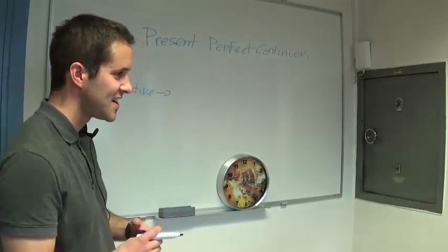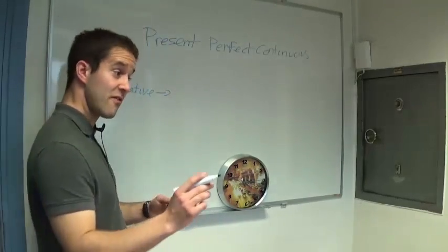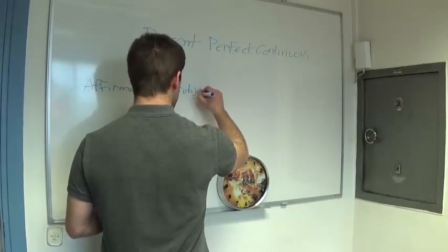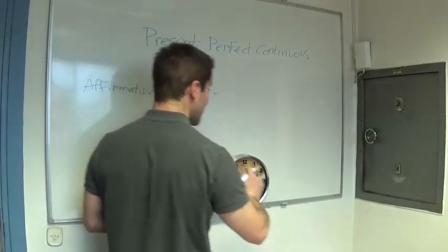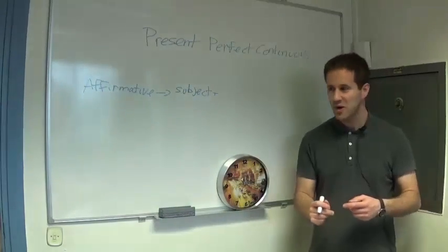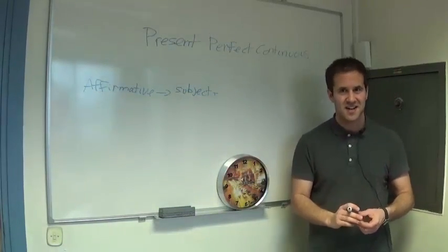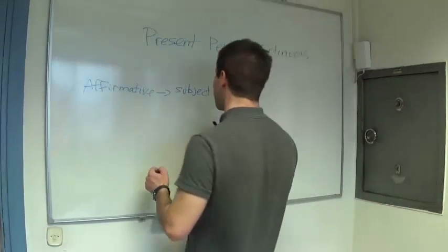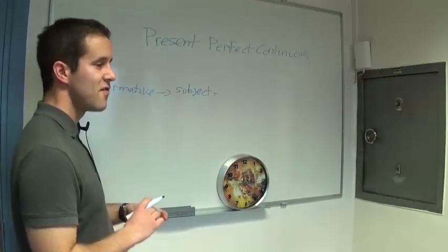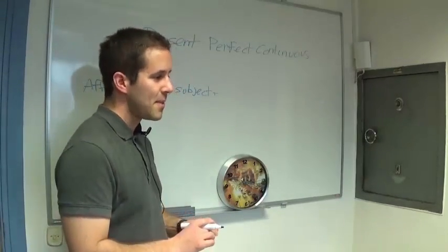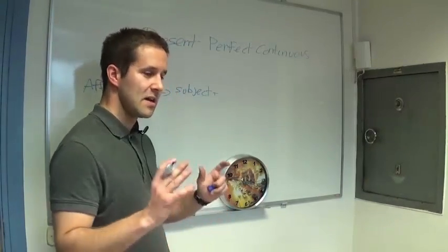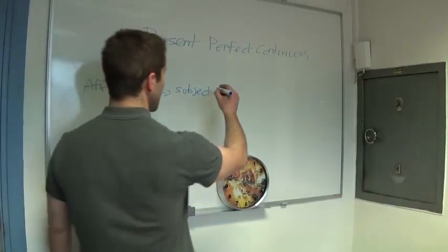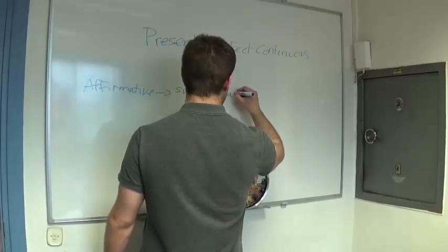First, we'll start with the subject, right? What would come after the subject? Exactly, so we'll have the verb to be, but we're going to use a different tense. So in this case, I have to say 'have.'